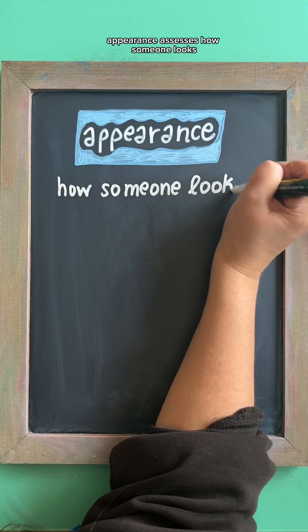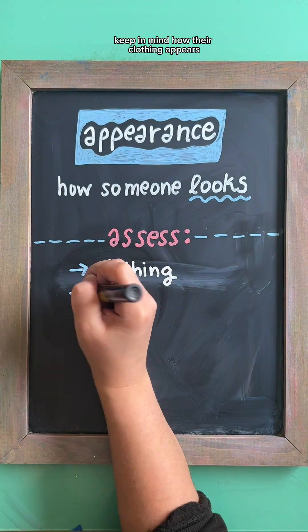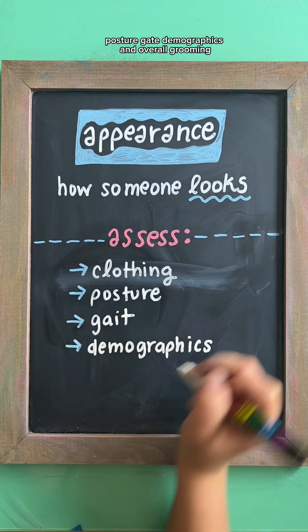Appearance assesses how someone looks. As soon as you see your patient, keep in mind how their clothing appears, posture, gait, demographics, and overall grooming.